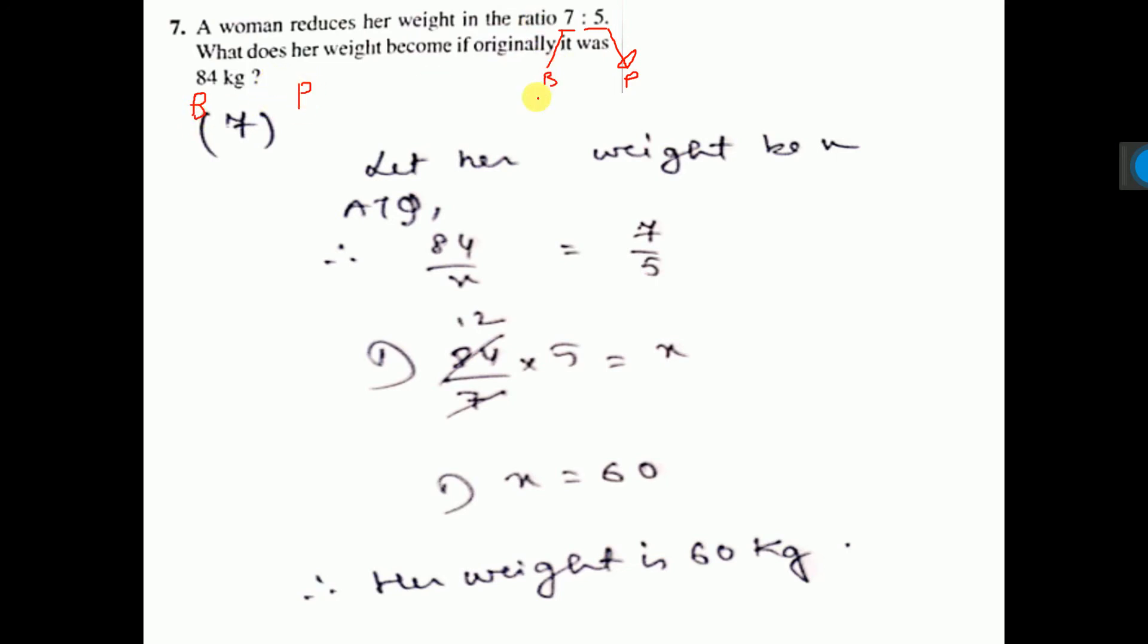So here the ratio before is to present. Here also before is to present. So present ratio you consider x. So before by x, you see before 84 by x, you are considering present weight x and the ratio is 7 is to 5.